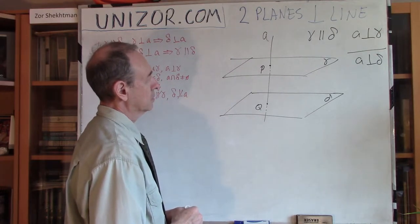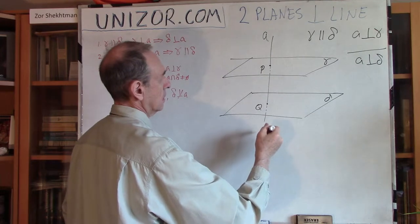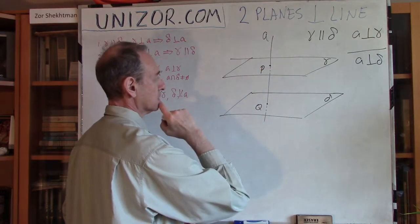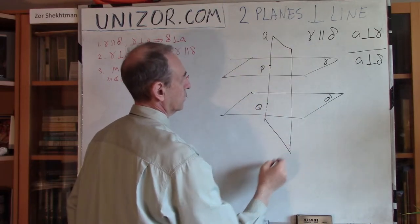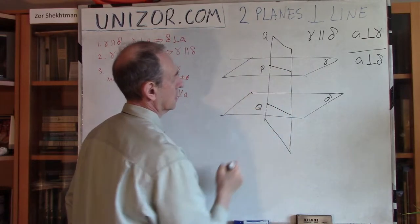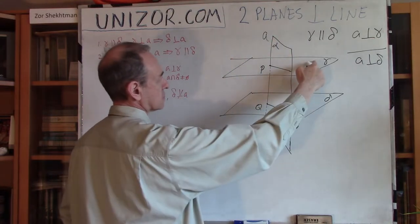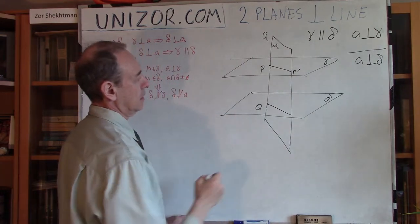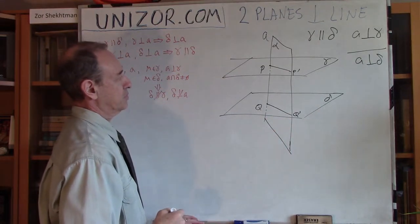What we do next is create a plane through line A. Since it completely contains line A, it must contain points P and Q, so it will intersect both gamma and delta. This auxiliary plane, let's call it alpha, intersects gamma at line PP prime and intersects delta at line QQ prime.